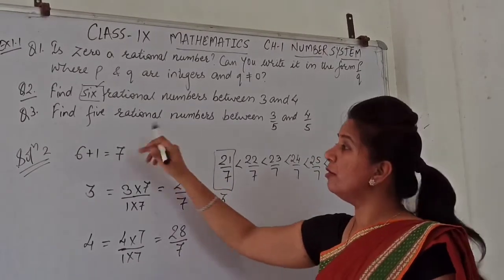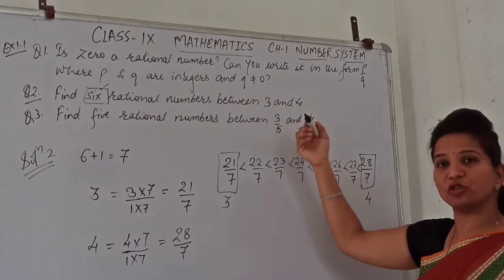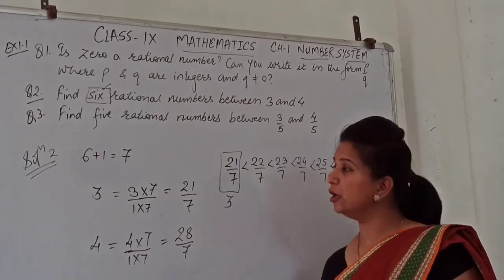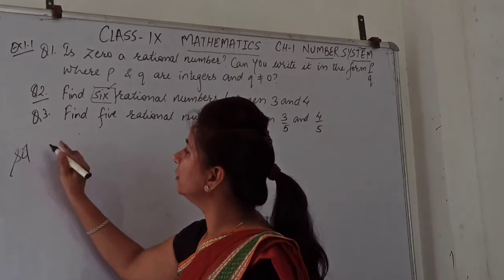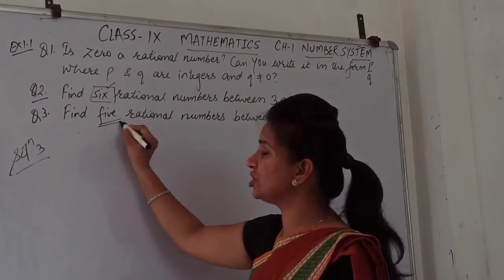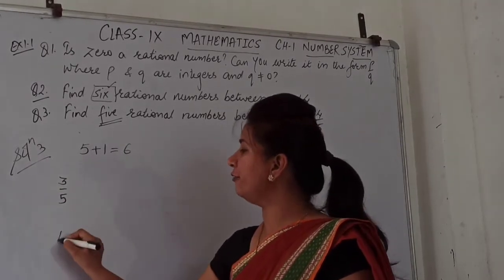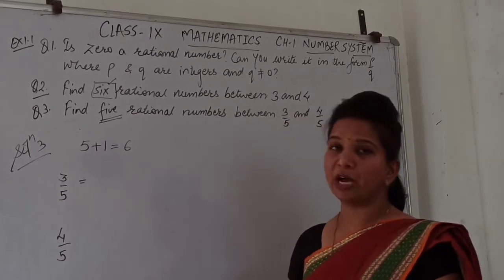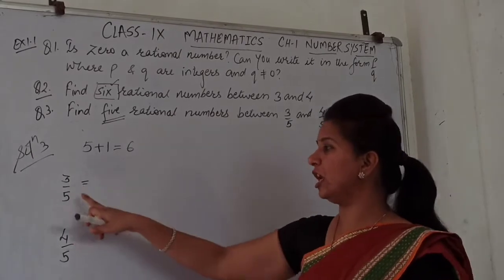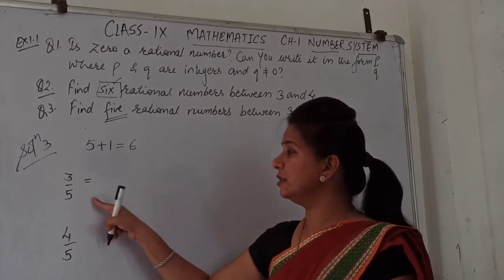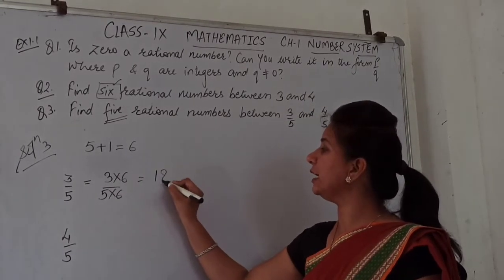Now for question number 3: we have to find 5 rational numbers between 3 upon 5 and 4 upon 5. Here we already have a denominator of 5. Since we need 5 rational numbers, we take 5 plus 1 equals 6. So we multiply both fractions by 6 over 6. For 3 upon 5, multiplying by 6 gives 18 upon 30.